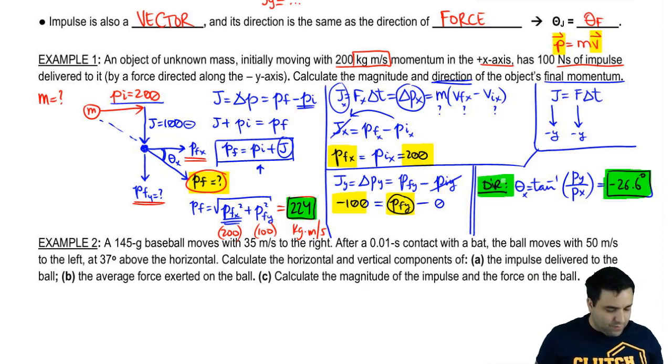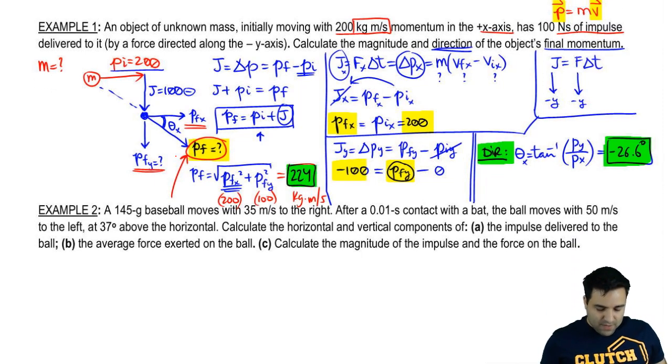So those are the two answers for this part. Just a quick example of how we can combine components of momentum to find the total momentum and the angle of the total momentum. I have a second problem here. Let's jump into that real quick.